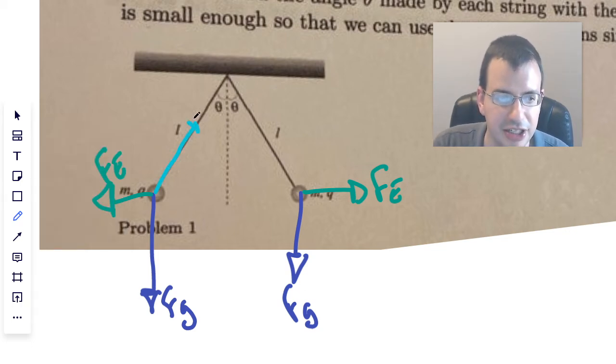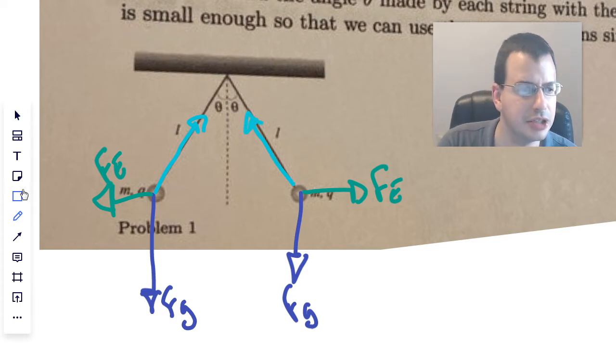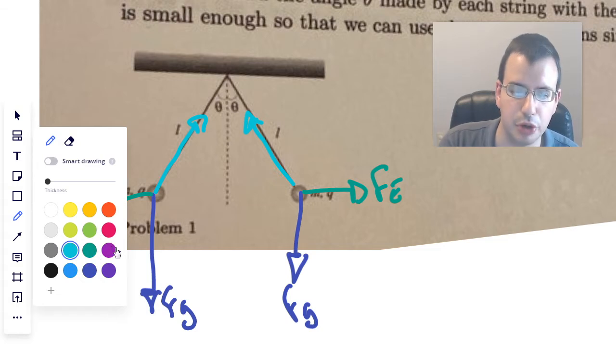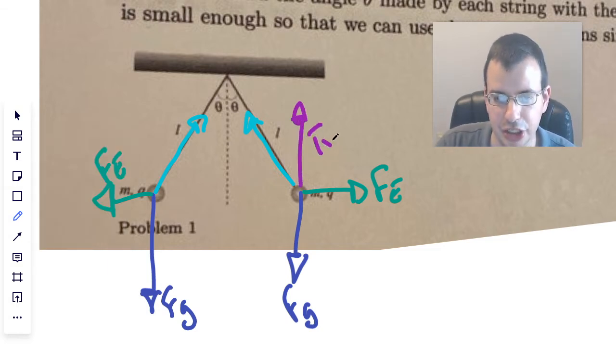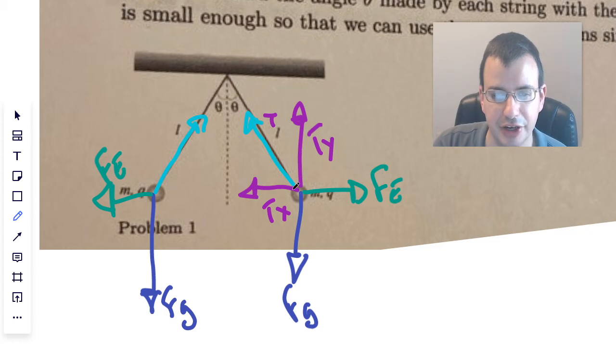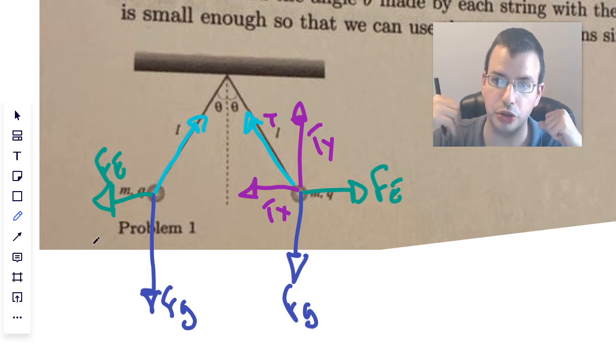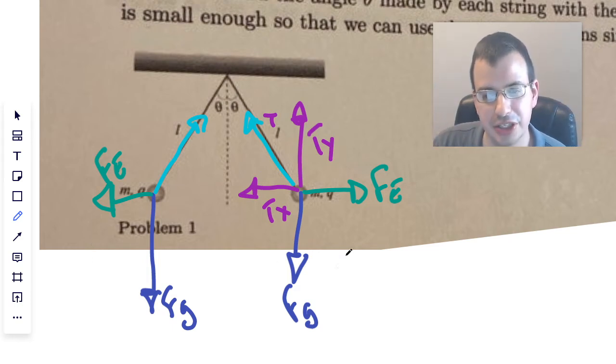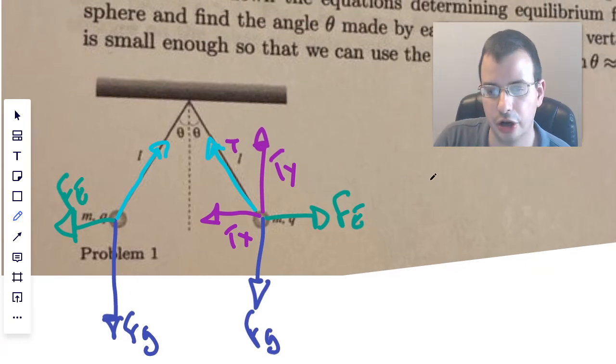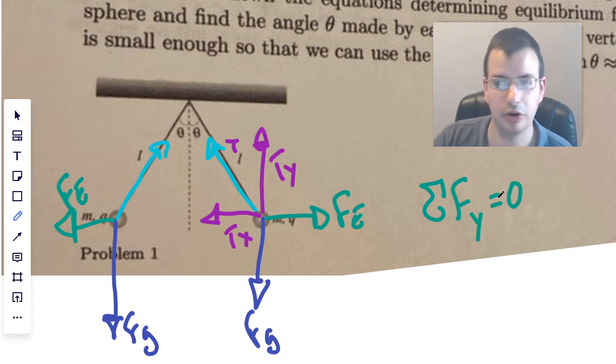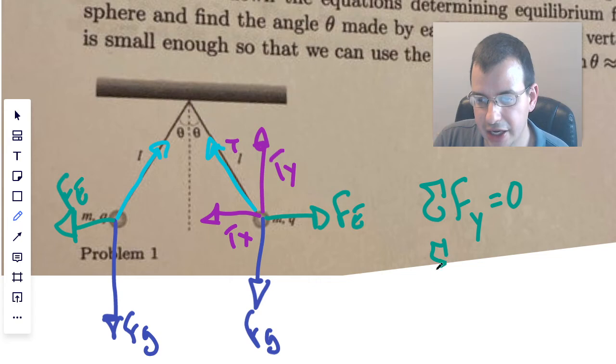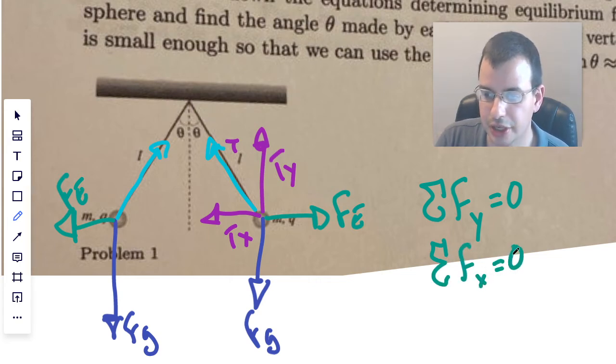And since everything is in equilibrium, it will all balance out. I'll get another color, purple. Then I'll call this tension Y. This will be tension X, which is just the decomposition of this tension vector right here. So we know that all the forces in the X direction are going to equal each other, and we know that all the forces in the Y direction are going to equal each other.